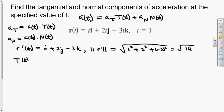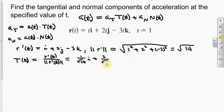From there we can find the tangent vector. Remember the tangent vector is r prime of t divided by its norm. So we have r prime divided by the square root of 14. That's 1 over root 14 times i, plus 2 over root 14 times j, minus 3 over root 14 times k.